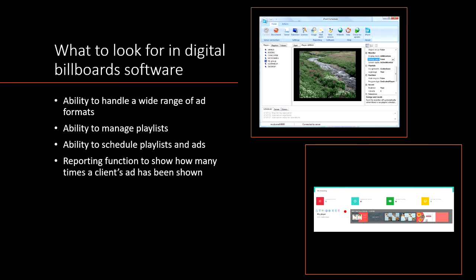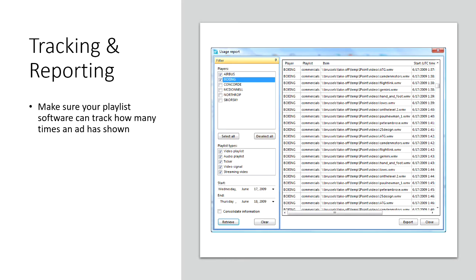When looking for digital billboard software, you want the ability to handle a wide range of ad formats, manage and schedule playlists and ads, and a reporting function to show how many times a client's ad has been shown. Here are screenshots of two playlist management software options: the High Point Scheduler and the cloud-based SignageTube. You also want your playlist software to track how many times an ad has been shown so you can report back to your client that their ad has been shown the requisite number of times.